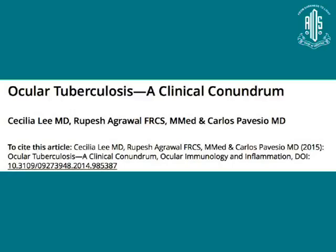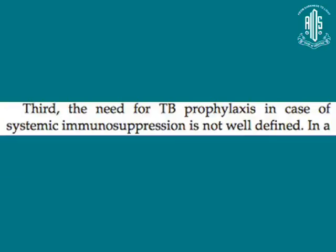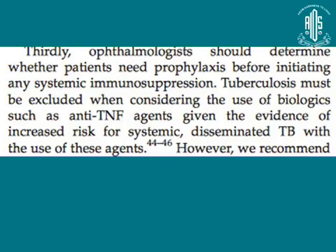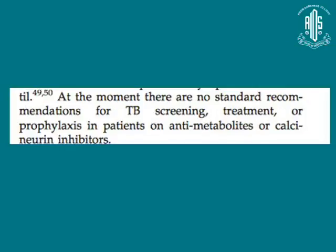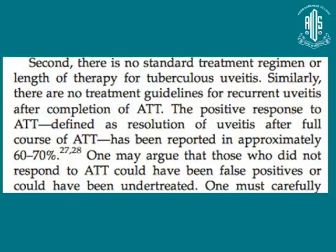A study on ocular tuberculosis published in Ocular Immunology and Inflammation (2015) noted that the need for a TB profile workup in cases of systemic immunosuppression is still not defined. Tuberculosis must be excluded when considering biologics such as anti-TNF agents, given the evidence of increased risk of systemic disseminated TB. However, for patients on anti-metabolites or calcineurin inhibitors, there are no standard recommendations. For patients who have proven tuberculosis and were given ATT, there are no treatment guidelines if they have recurrent uveitis. A positive response to ATT — defined as resolution of uveitis after a full course — has been reported in 60 to 70%, but for the remaining patients there are no guidelines.